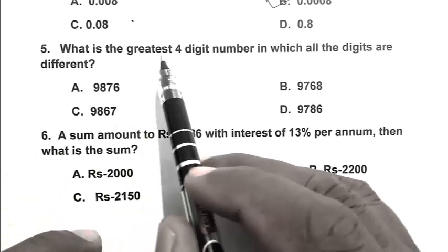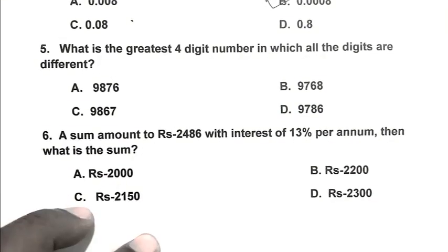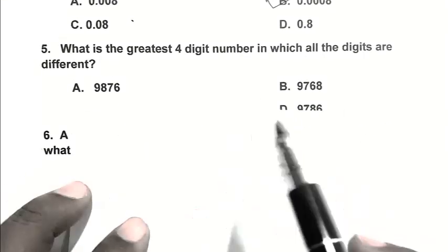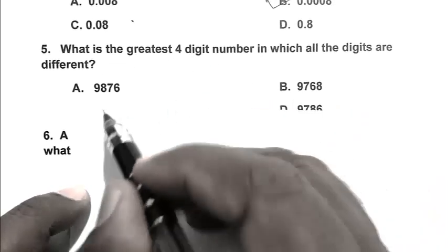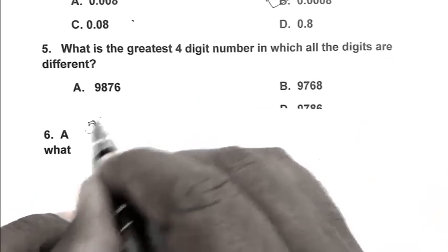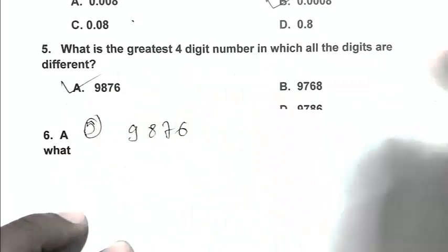Question number 5. What is the greatest 4 digit number in which all the digits are different? We have to calculate the greatest 4 digit number. So we have to write greatest digit first. So the number is 9876. So A is the right answer.